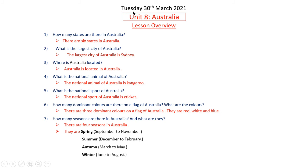Tuesday 30 March 2021, Unit 8: Australia, Lesson Overview. Question 1: How many states are there in Australia? There are 6 states in Australia.